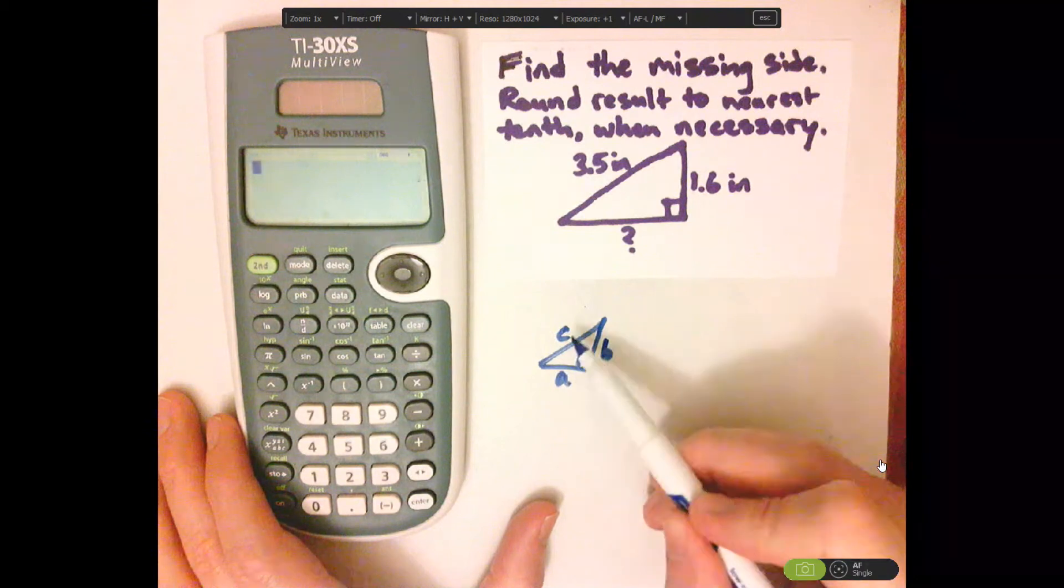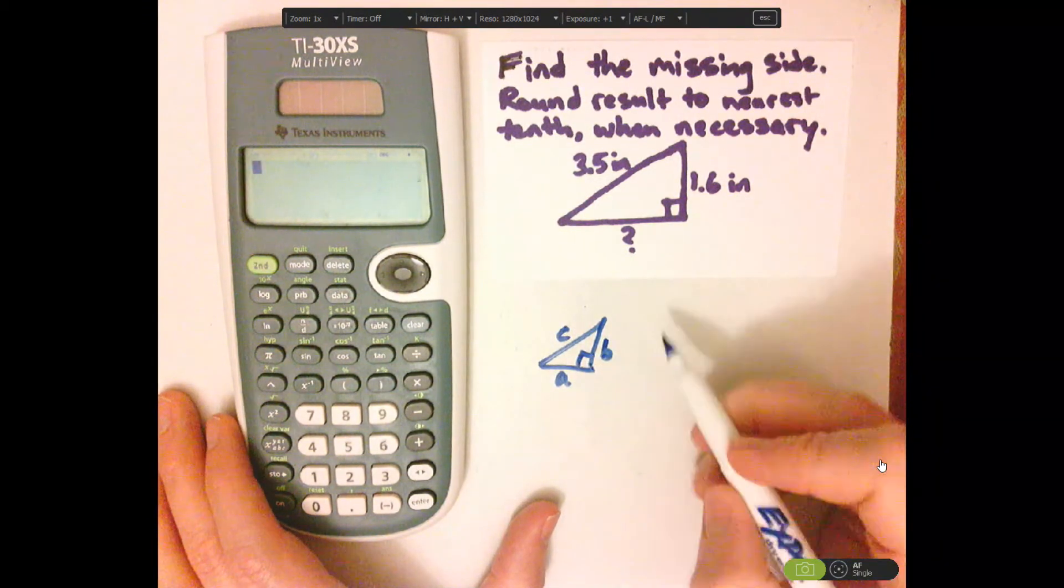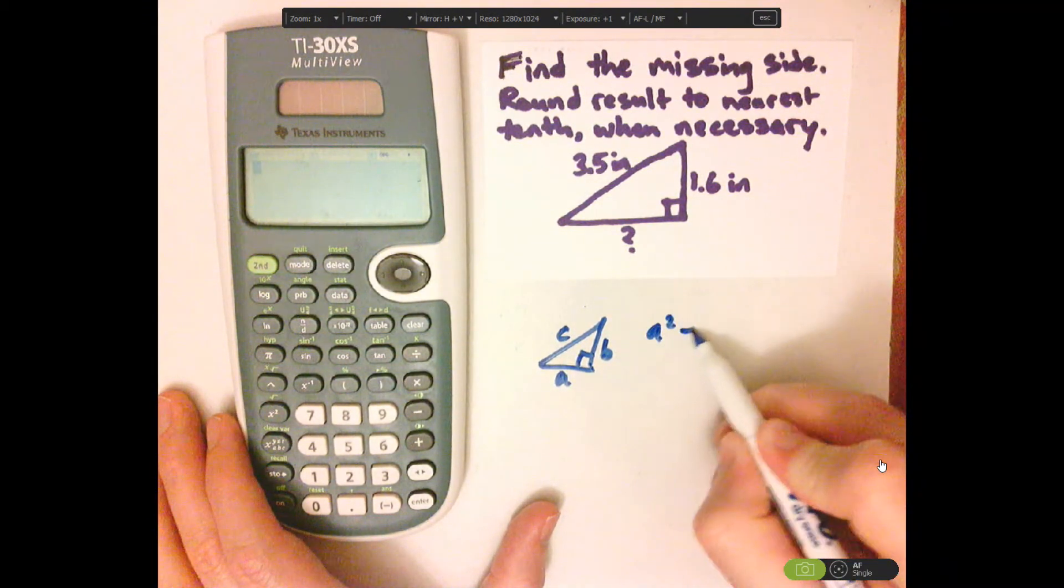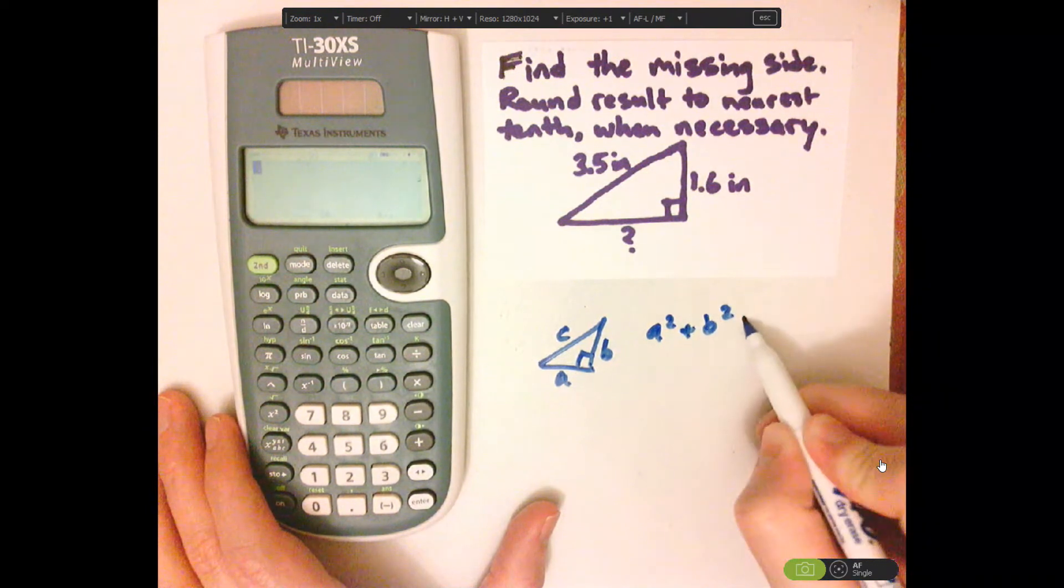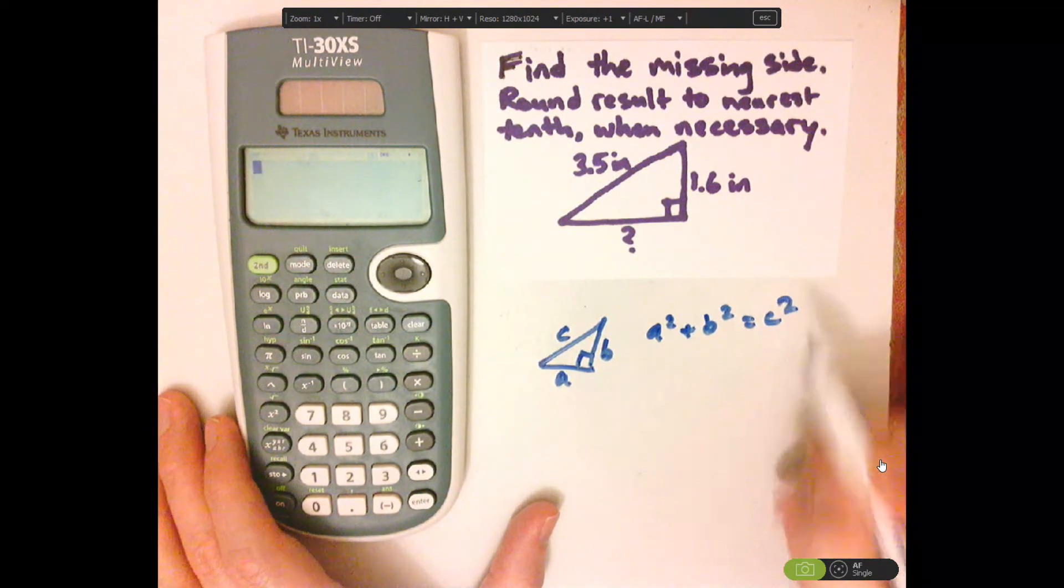A and B are your legs, C is the hypotenuse. A squared plus B squared equals C squared.